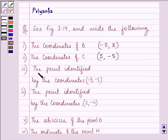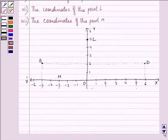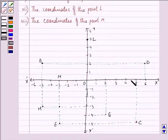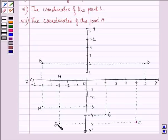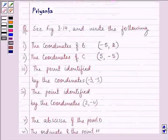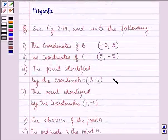Then the point identified by the coordinates (-3, -5). Minus 3 means from the x-axis minus 3, and from the y-axis it is minus 5. So we land on this point and the name of this point is E. So the answer to this is E.